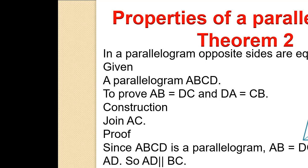Proof. Since ABCD is a parallelogram, AD is parallel to BC. AC is a transversal, so Angle DAC equals Angle ACB by the Alternate Angles Theorem. Also, Angle BAC equals Angle DCA, and AC equals CA as the common side. By ASA congruence, Triangle ADC is congruent to Triangle CBA. Therefore AB equals CD and BC equals AD, by corresponding parts of congruent triangles — that is, by CPCT.